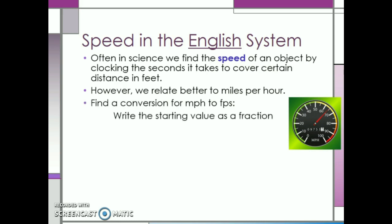We will start out by writing our initial value as a fraction, one mile over hour. Now, we need to convert miles into feet and hours into seconds. Since we start out with miles in the numerator, we will need to put miles in the denominator of our conversion factor. We can use our table to see that one mile is equal to 5,280 feet, putting one mile in the denominator since we already have miles there, and 5,280 feet in the numerator.